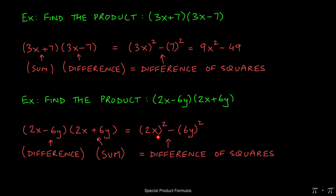When we multiply 2x by itself, we're going to get 4x squared, and when we multiply the 6y by itself, we're going to get 36y squared.